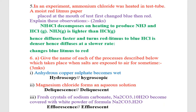Question number five: In an experiment, ammonium chloride was heated in a test tube. A moist red litmus paper was placed at the mouth of the test tube, and it first changed to blue and then to red. Explain this observation for two marks.